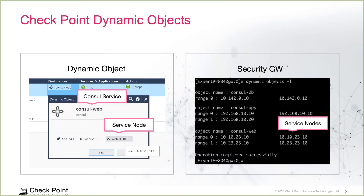Now under the hood, we're using dynamic objects. On the left, we have our Consul services, which is the dynamic object name. Then we have each service node as a tag value. On the right, we have an output of our security gateway that represents the service and a service node IP address.